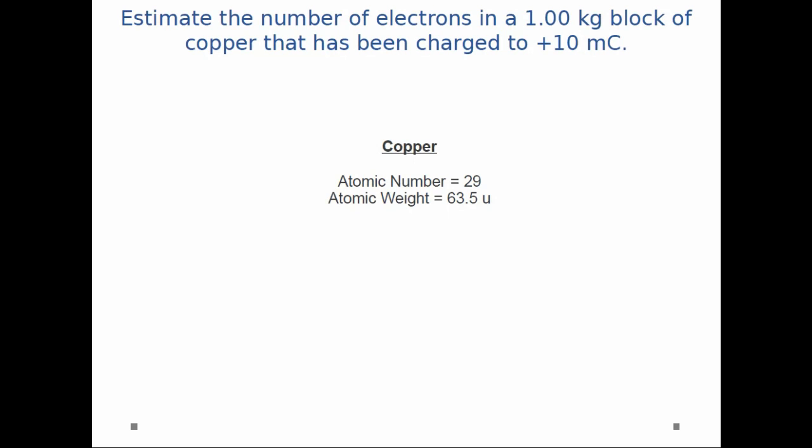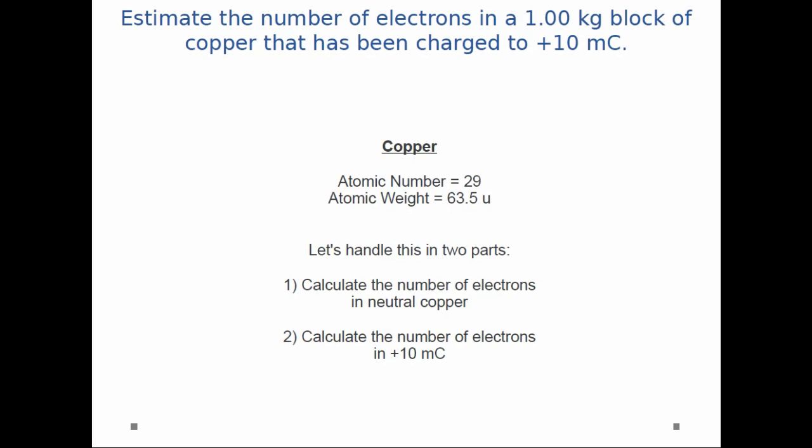I give you the atomic number and atomic weight of copper. We can handle this problem in two parts. First, let's calculate the number of electrons in neutral copper. Then, let's calculate the number of electrons taken away when we charge it to plus 10 millicoulombs, and combine those two numbers. Let's start with the first part.